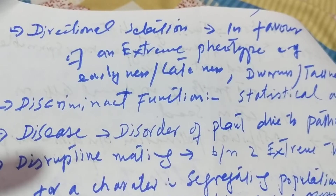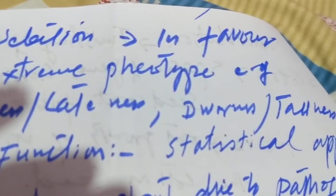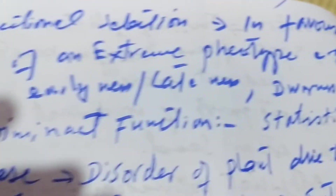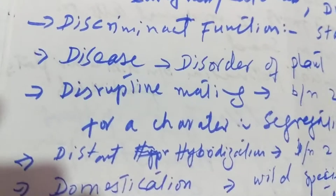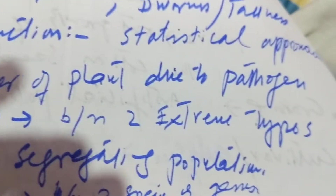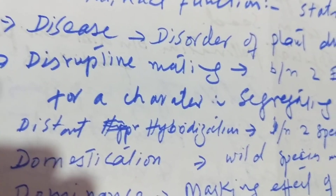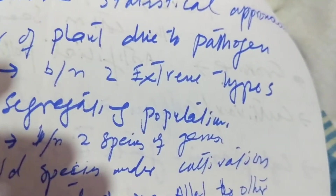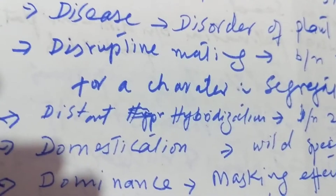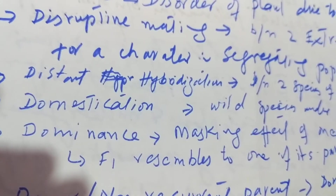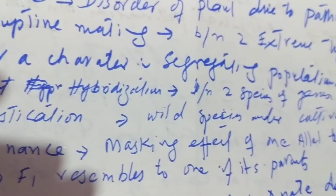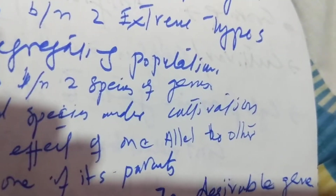Diploid number is the somatic chromosome number of a species. Direct introduction is the immediate adaptation to a changed environment. Directional selection is in favor of an extreme phenotype, for example earliness or lateness, dwarfness or tallness. Disease is a disorder of a plant due to a pathogen. Disruptive mating is between two extreme types for a character in a segregating population.